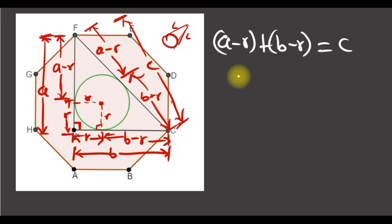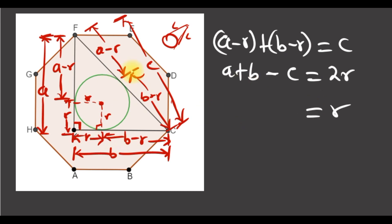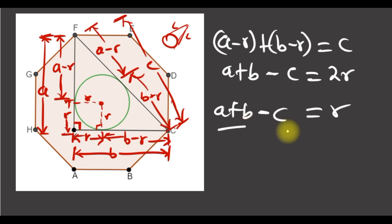So we now have a + b − 2r = c, which rearranges to 2r = a + b − c. So the radius of any incircle of a right triangle is just the sum of the legs minus the hypotenuse, divided by 2. That's another thing we need to know.